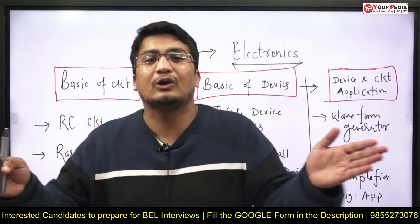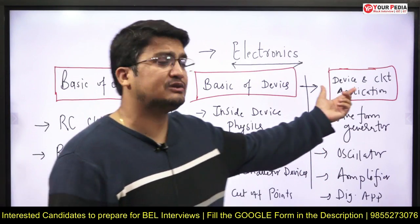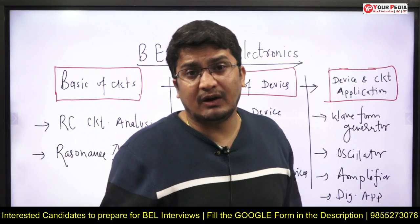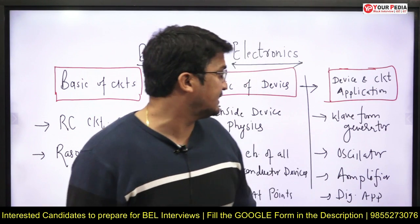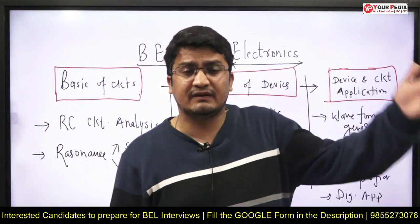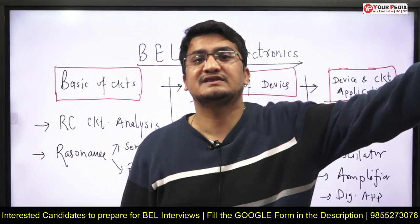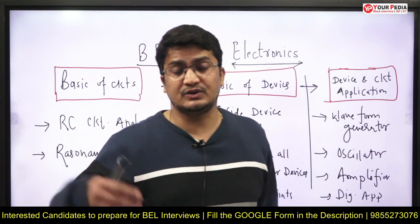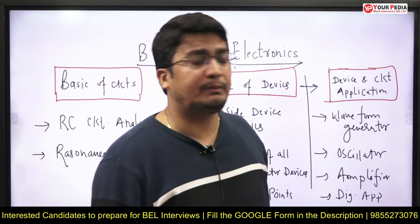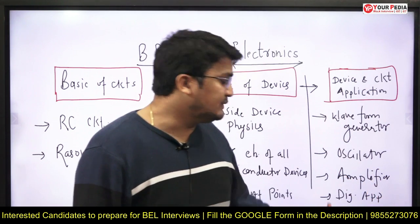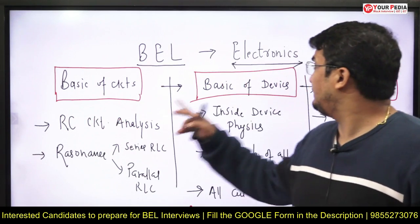Once you have studied these, look at the applications. Using BJT, MOSFET, or operational amplifier — how can you use them for waveform generators? Square wave generator, triangular wave generator — these you need to study. How can they be used as oscillators: sinusoidal and non-sinusoidal? How can BJT, MOSFET, and op-amp be used as amplifiers, and how can they be used in digital applications?